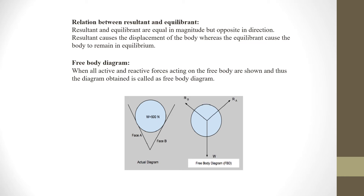Here we have phase A and phase B, and the weight is 500 N. As we know, weight always acts downwards, so we have shown weight W as downwards. The reaction at phase B is RB, acting in this direction. And here, the reaction RA acts along this direction.